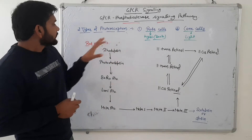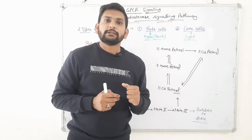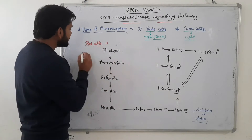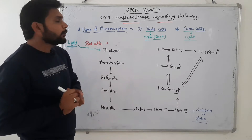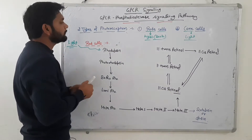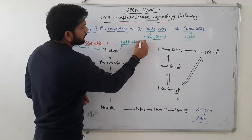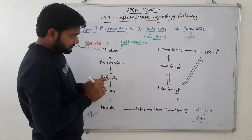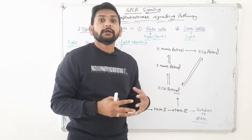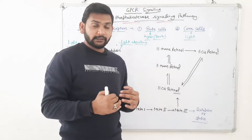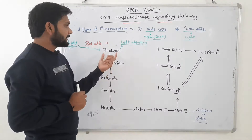First, what is rhodopsin? Rhodopsin is an integral membrane protein which is present on the rod cells. We all know that rhodopsin is a light-absorbing pigment. We are going to discuss today how rhodopsin makes 11-cis-retinal or 11-trans-retinal. Light comes and the light-absorbing pigment here is rhodopsin.